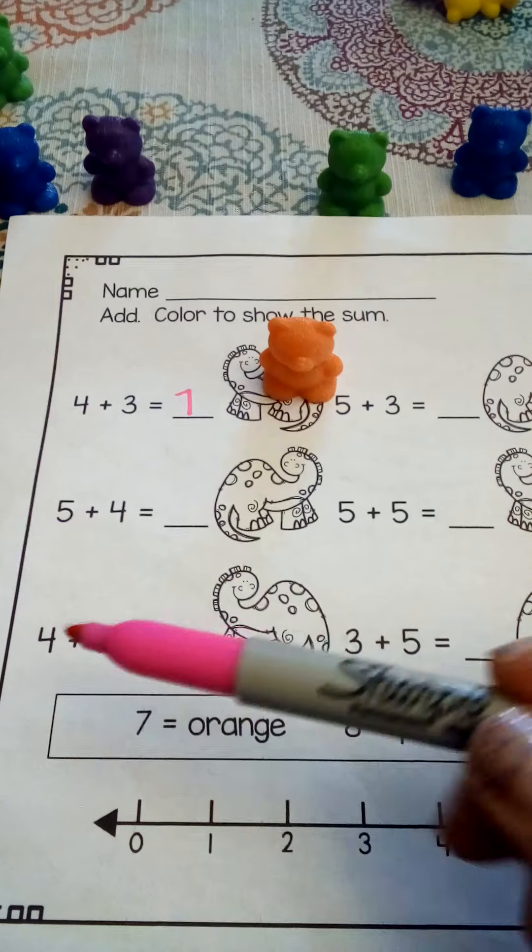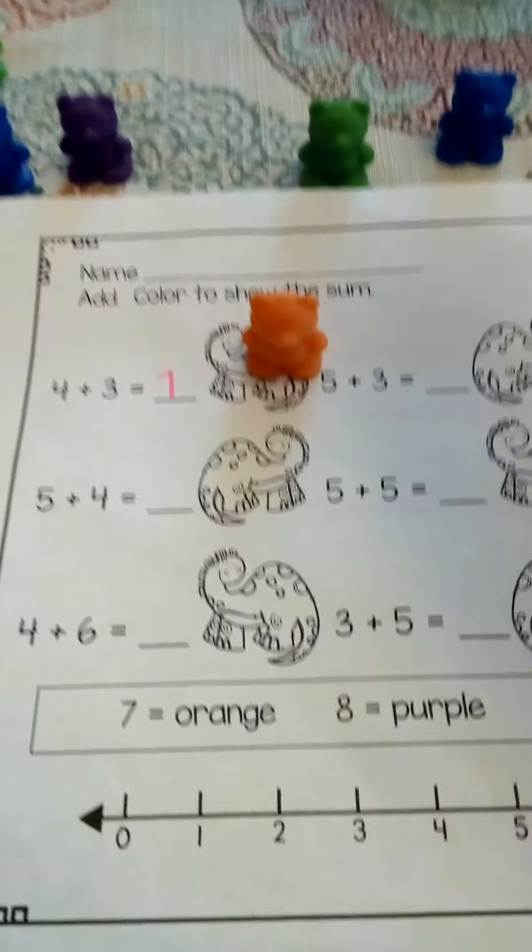And then I'm going to look down here and I see that seven is the color orange. So you're going to go back and color that dinosaur orange. Okay. All right. Let's go to the next one, five and four.